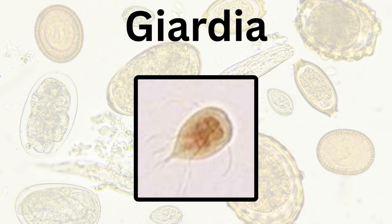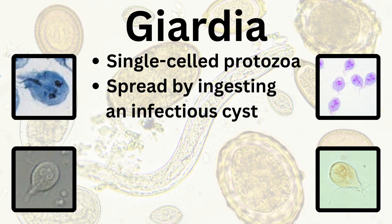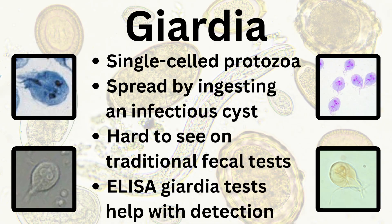Because of this, unique symptoms of hookworms may include anemia or black tarry stools due to the loss of blood in the digestive tract. One parasite you definitely will not see in your cat's stool is Giardia — a single-celled protozoan spread by ingesting an infectious cyst, either from water or anything contaminated with infected feces. Giardia is hard to see on traditional fecal analysis, which is why an ELISA test was developed to help diagnose this parasite, since it can be easily missed with a microscope.